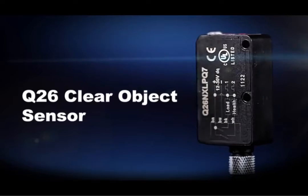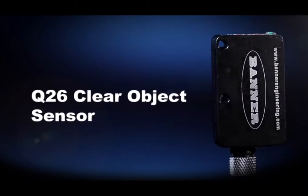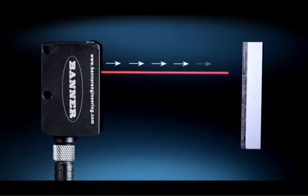Banner's Q26 Clear Object Detection Sensor reliably and quickly detects clear or transparent objects for multiple application needs. With the Q26's coaxial design, light shoots out and comes back on the same axis.